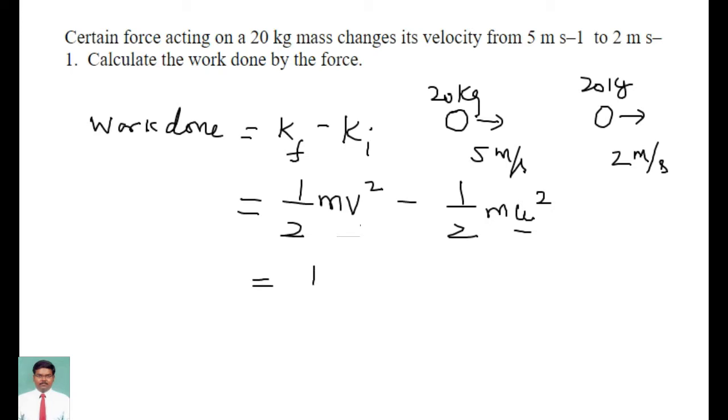So if I take half m as a constant, I am going to have v square minus u square. If I substitute the value of the initial velocity and the final velocity, I can calculate the work done very easily.